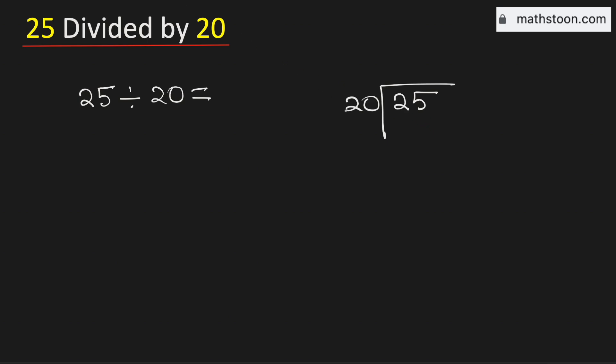We know that 20 times 1 is 20. Subtract we get 5.